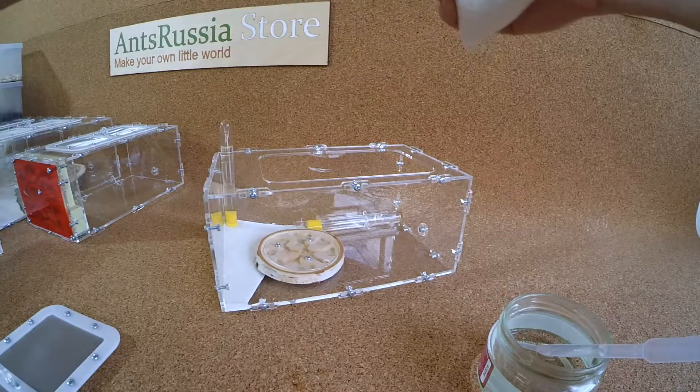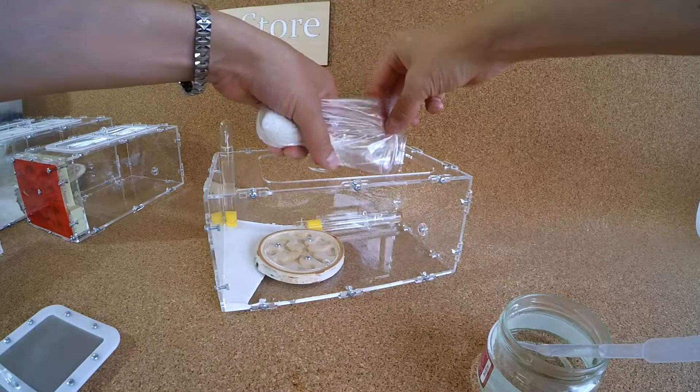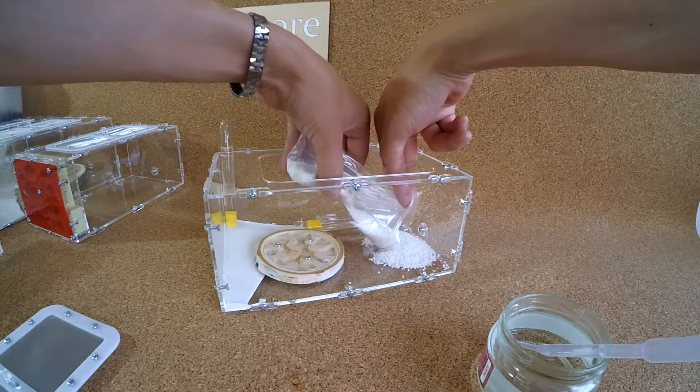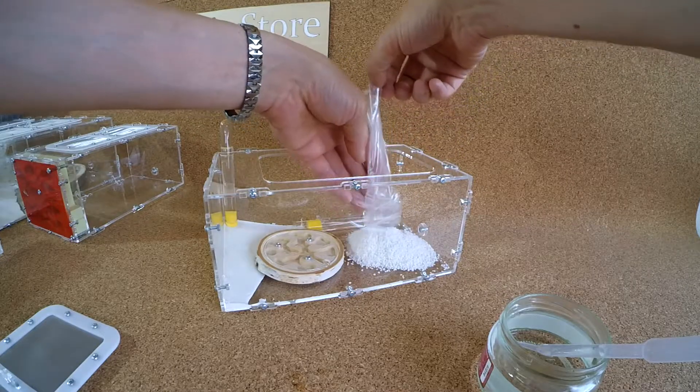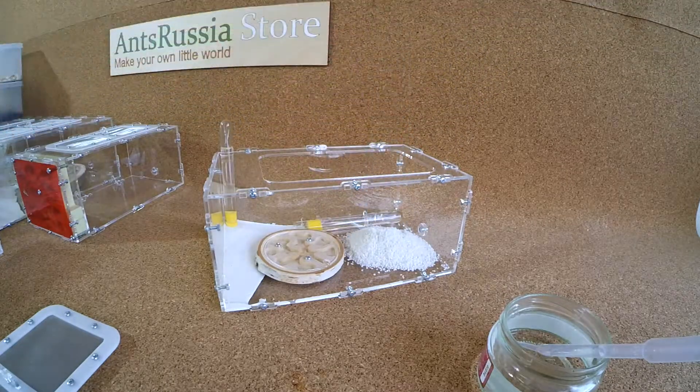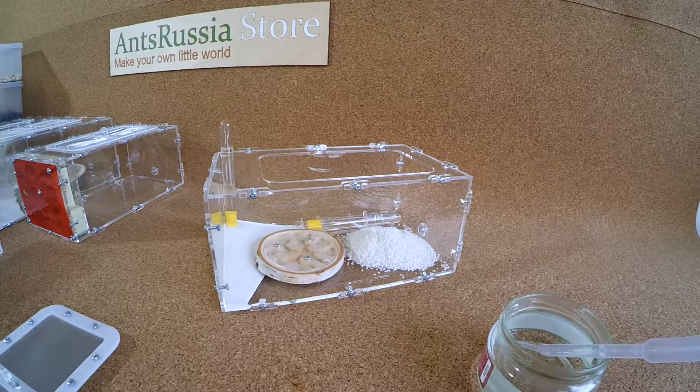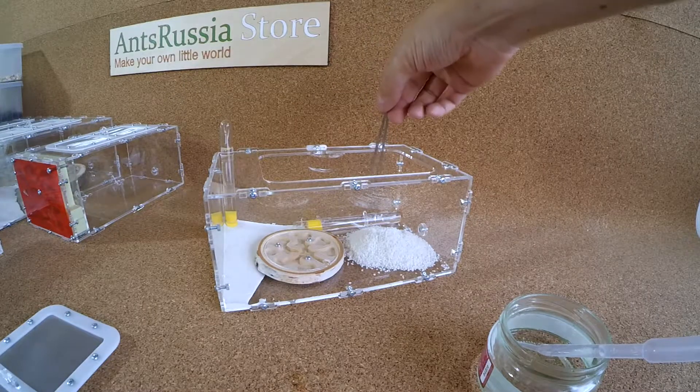As soil we decided to use marble grains. These ants are small sized. Worker ants are about 4-5 mm, soldiers are about 7-8 mm, and therefore a light colored bottom would be preferable.